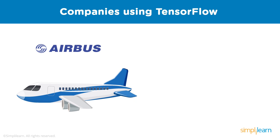Airbus also uses TensorFlow to extract information from satellite images and deliver valuable insights to their clients. Machine learning helps with monitoring changes to the earth's surface for urban planning, fighting illegal construction, and mapping damage and landscape changes caused by natural catastrophes — all used by Airbus to gather statistics and deliver insights.